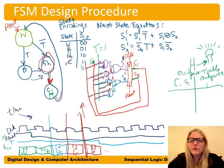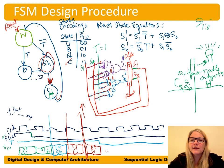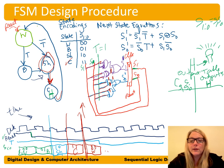Let's recap our design procedure. First, we identify our inputs and outputs — drawing a black-box diagram. In this example, input T and output H (the happy signal). Finite state machines always also have clock and reset as inputs.